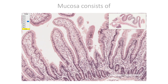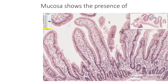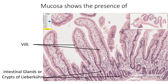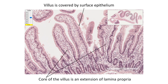The mucosa consists of lining epithelium, lamina propria, and muscularis mucosae. Throughout the length of the small intestine, the surface shows numerous mucosal projections called villi and in-foldings to form intestinal glands. Each villus is covered by surface epithelium and carries an extension of lamina propria in its core. The core contains fibroblasts, smooth muscle fibers extending from the muscularis mucosae, various cells of the immune system, fenestrated capillaries, and blind-ending lymphatic vessels called lacteals.